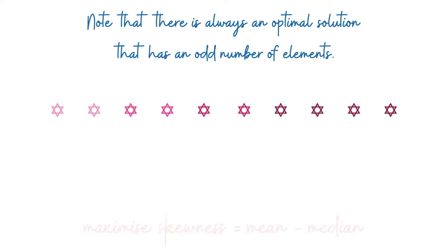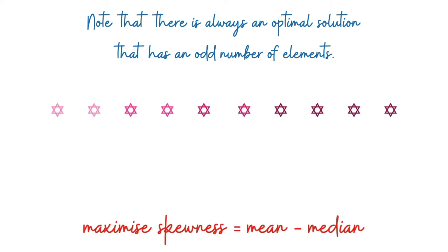Why can we assume odd-sized solutions without loss of generality? Suppose someone gives you an optimal solution with an even number of elements. It must have non-negative skewness, since singleton sets always have zero skewness — mean equals median — so the optimal can never be negative. With non-negative skewness, the mean is at least the median. Under that assumption, if you eliminate the larger of the two middle elements, the resulting set's skewness does not decrease.